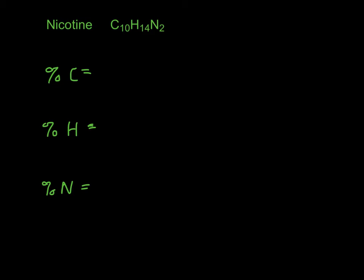So let's try one more. This is nicotine. The first thing I want to do is find the molar mass of nicotine, so it's going to be 10 times 12.01, plus 14 times 1.01, plus 2 times 14.01, the molar masses of these things. And if you add all that up, you get 162.26 grams per mole.